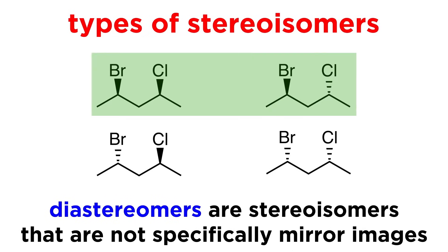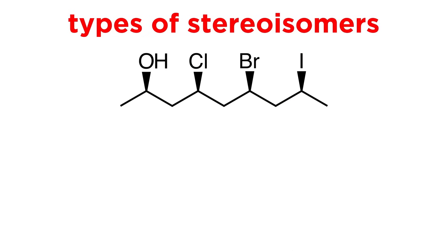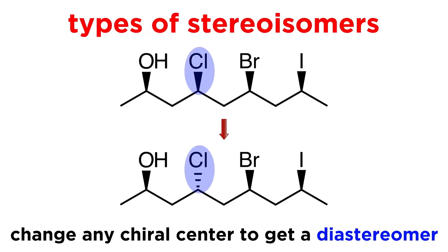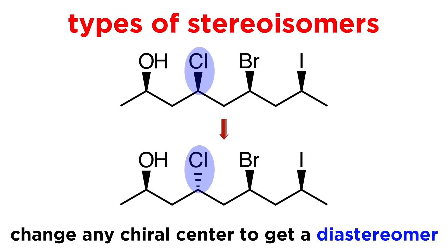Diastereomers are stereoisomers that are not mirror images. So if a molecule has multiple chiral centers, inverting one or more but not all of the chiral centers would produce one of several other possible diastereomers. Remember, if we invert all of the chiral centers on a molecule — whether that is one or ten — we produce the enantiomer. It is only if not all of the chiral centers are inverted that we produce a diastereomer.